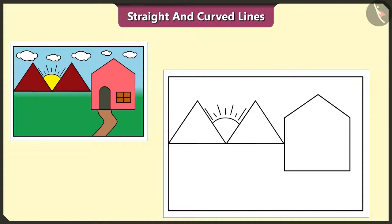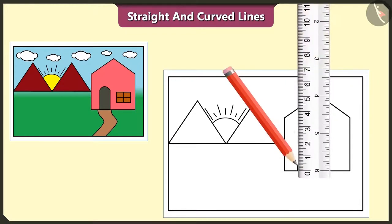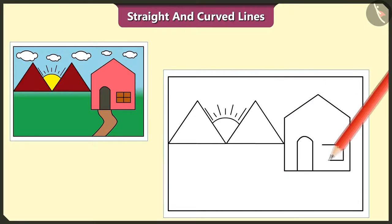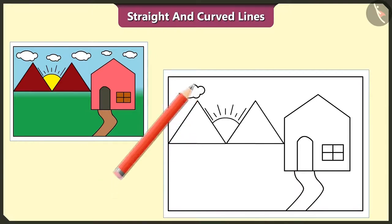Oh, we forgot to draw the door and the window of this house. Yes, let's draw a door by using two straight lines and one curved line. And draw this window using these six straight lines. Now, let's draw the path to the house with the help of two curved lines. Also, let's make clouds here. Wow, here we have drawn a beautiful picture.